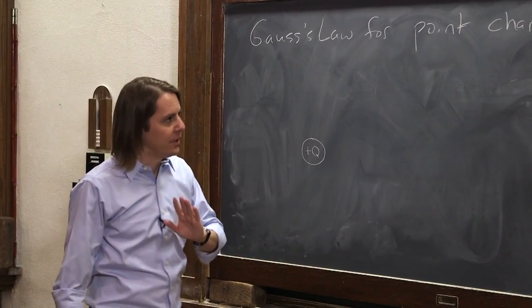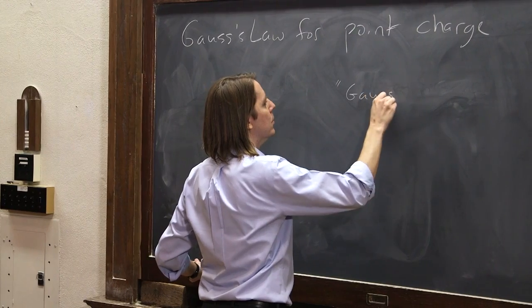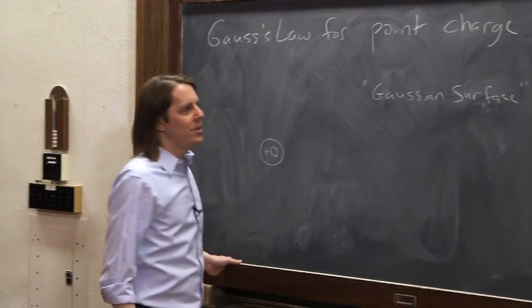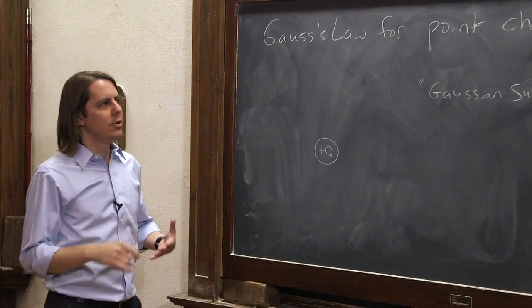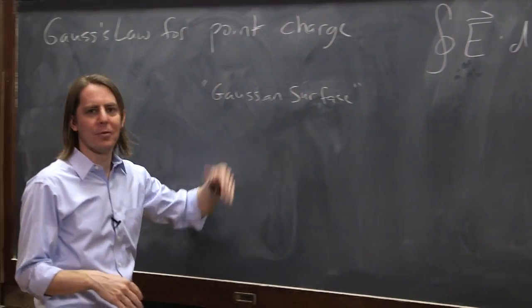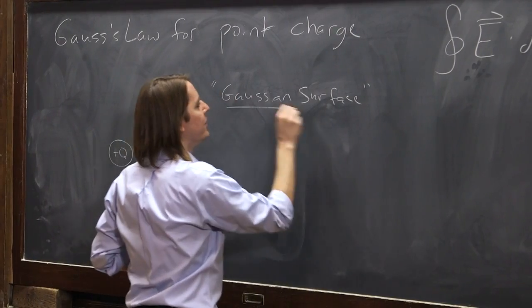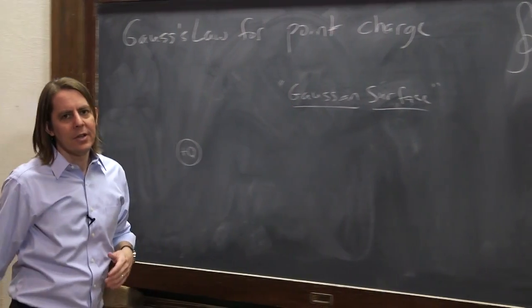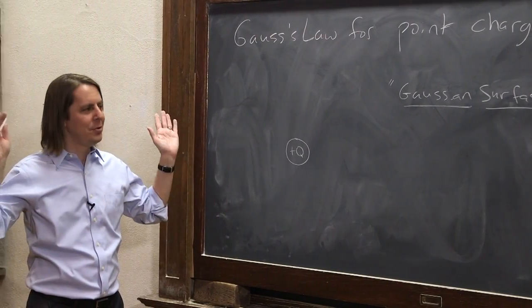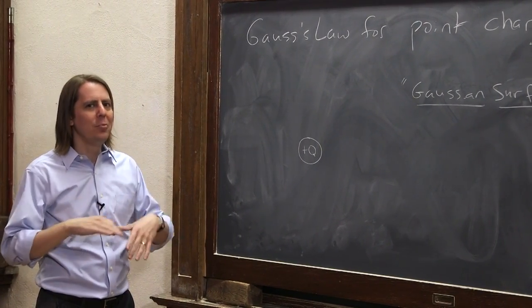The first step in using Gauss's law to find an E field is to draw a Gaussian surface. That's the closed surface over which you'll apply Gauss's law. It has to be closed. Choosing the Gaussian surface is the most important part - if you choose the right one it'll be fine, if you choose the wrong one it won't work.